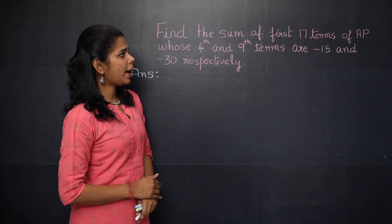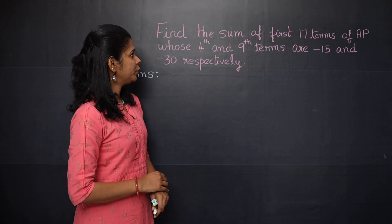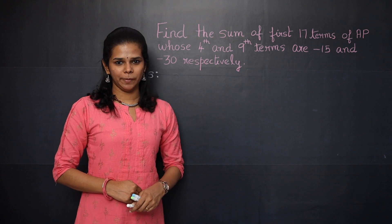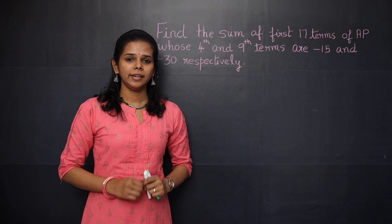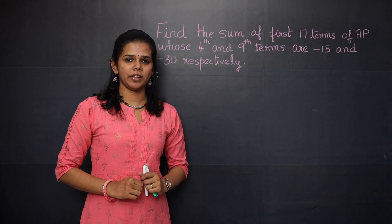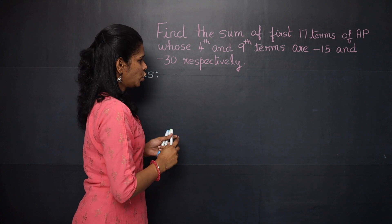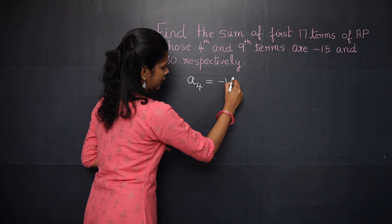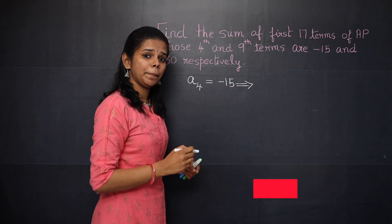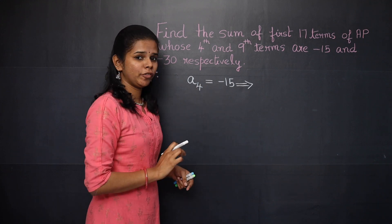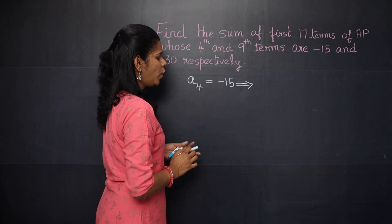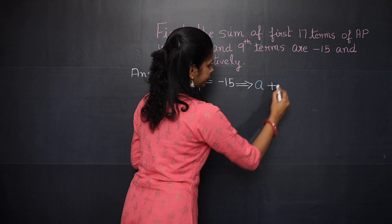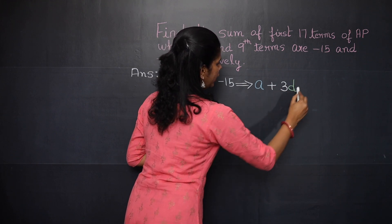Next example: find the sum of the first 17 terms of an AP whose 4th and 9th terms are −15 and −30 respectively. Let a be the first term and d the common difference. Since a4 = −15, we get a + 3d = −15.